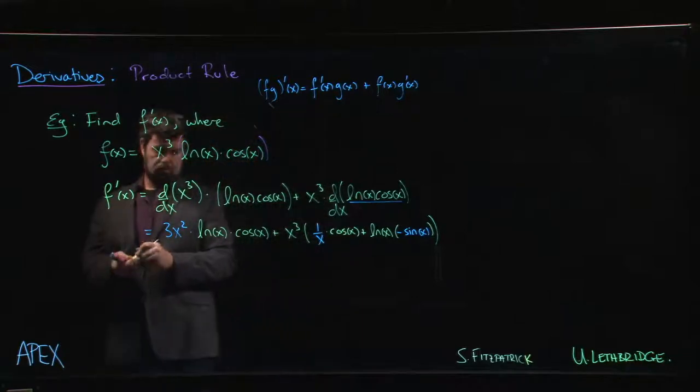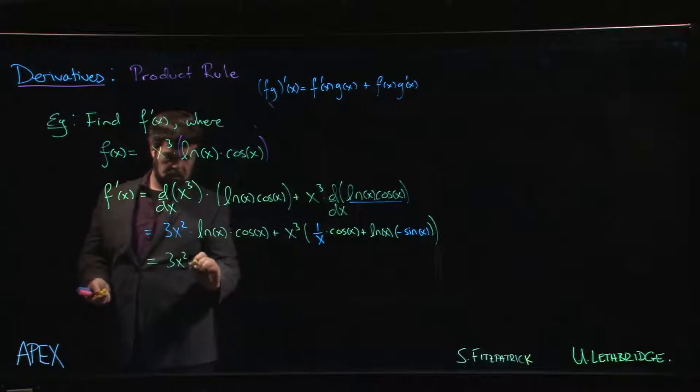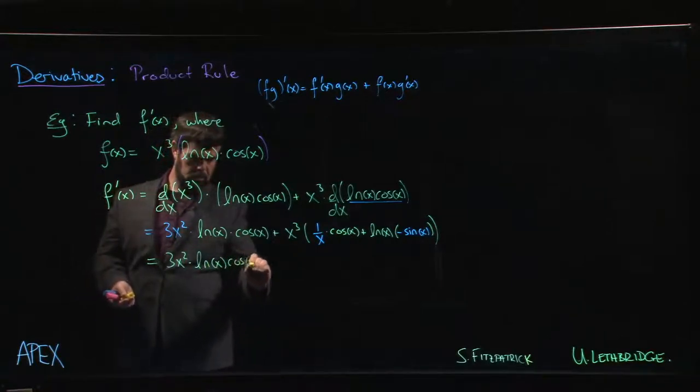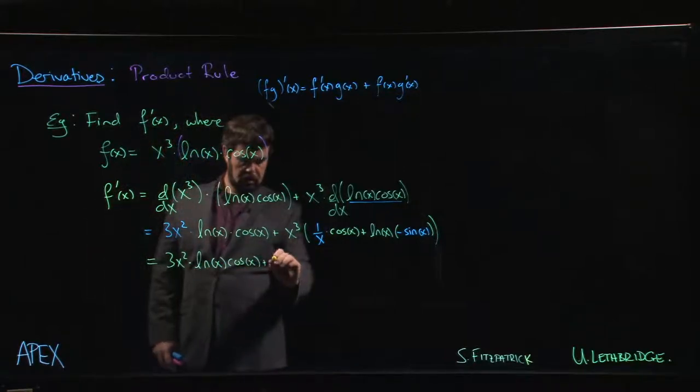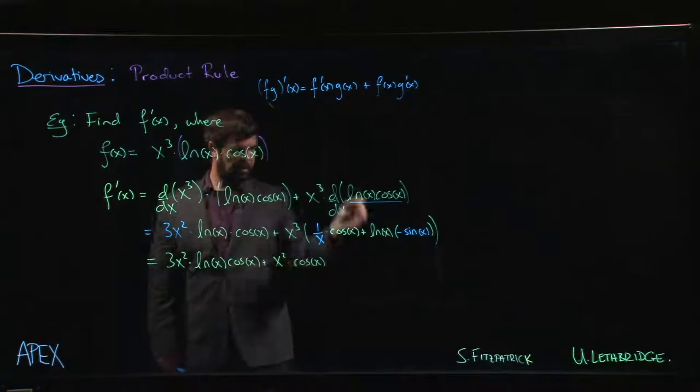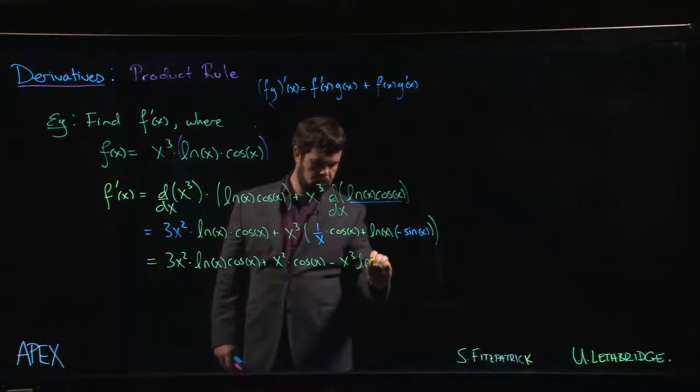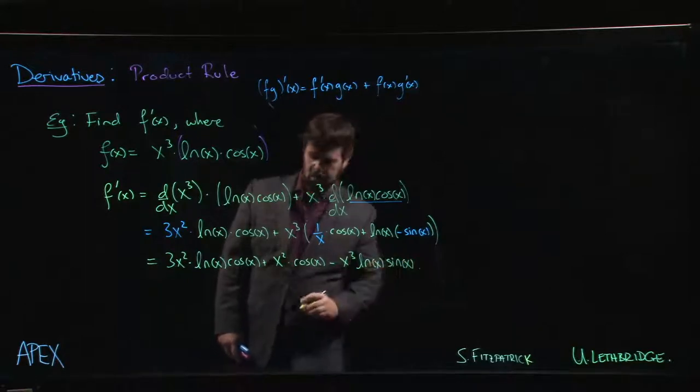If you want to, you can simplify a little bit. x cubed times one over x gives x squared times cos x. Bring that minus sign out front. And you're done.